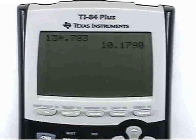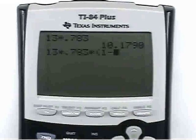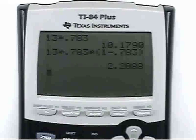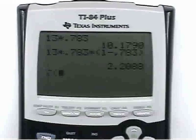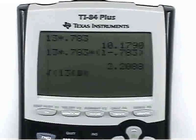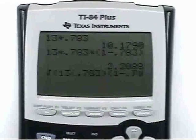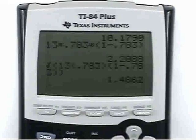Okay, the variance. The variance we said was 13 times 0.783 times 1 minus 0.783, and there's my standard deviation 1.4862.